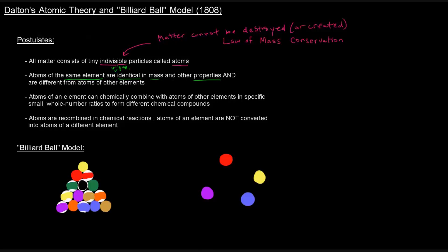Next postulate. Atoms of an element can chemically combine with atoms of other elements in specific small whole number ratios to form different chemical compounds. So this postulate is kind of a statement. It basically wraps up two of the matter laws, right?